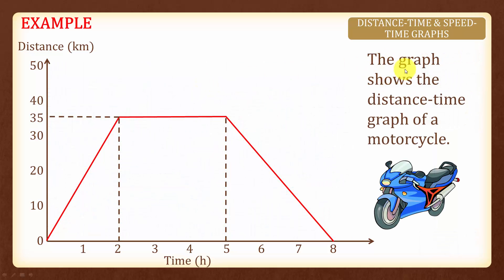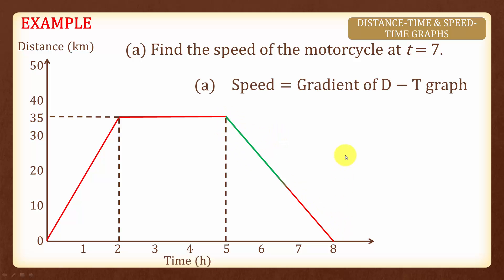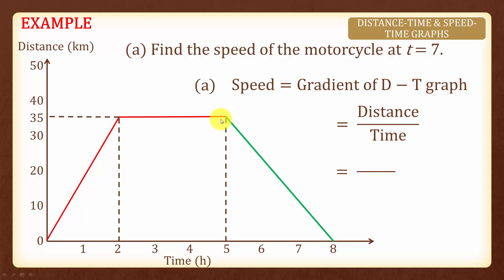Now let's look at an example. The graph shows the distance-time graph of a motorcycle. We are asked to find the speed of the motorcycle at t equals 7. The speed of the motorcycle is actually the gradient of the distance-time graph. In this case, we will find the gradient of this line. The gradient is the distance divided by time, which equals the distance of 35 divided by the time of 8 minus 5. And we have the speed to be 11.7 km per hour, rounded off to 3 significant figures.